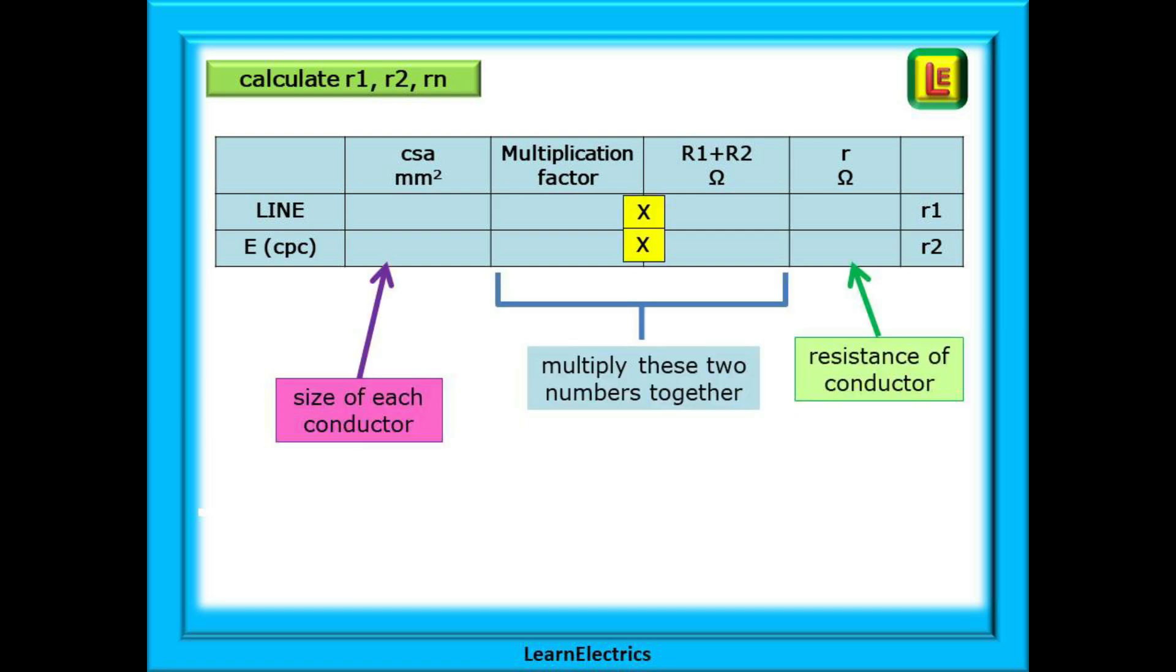We are going to enter the size of the conductors first, and then we will find a multiplication factor. If we then multiply this by the big R1 plus big R2 value, out will pop the end-to-end resistance of each conductor, the little R1 and the little R2.